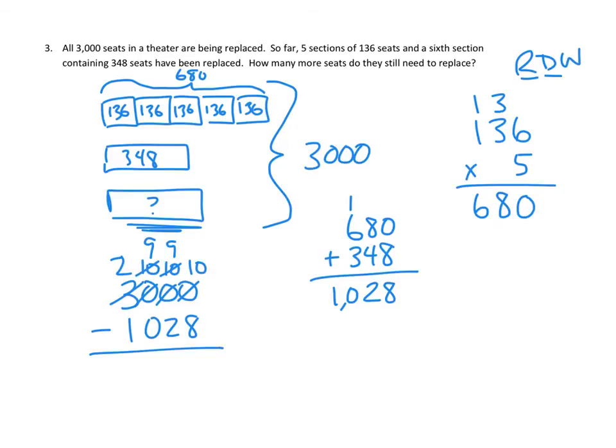And now I think, let's just check. I think we have enough in every column. So we need to subtract 8 ones from 10. We can do that. We need to subtract 2 tens from 9. We can do that. We need to subtract 0 from 9. We can do that. And then 1 from 2. All good. So let's go ahead and do that subtraction. That's 2 ones, 7 tens, 9 hundreds, and 1,000.